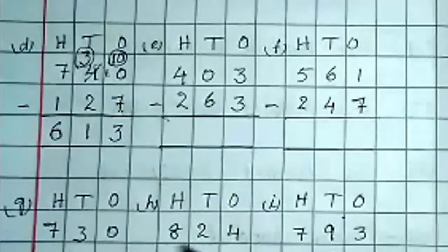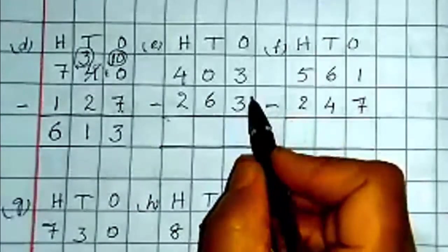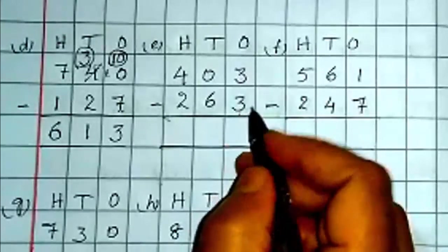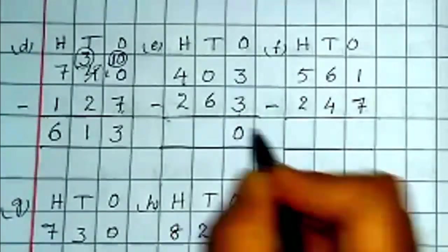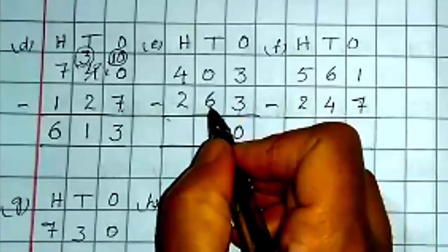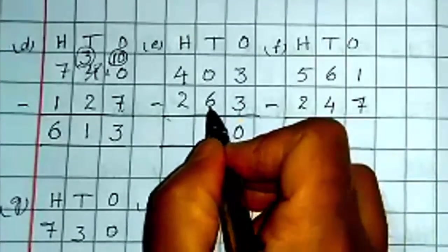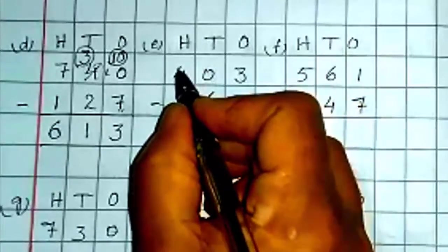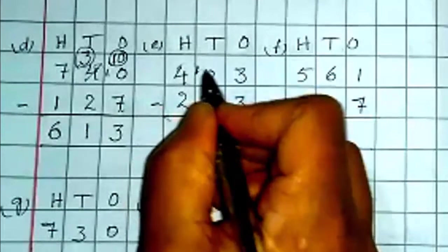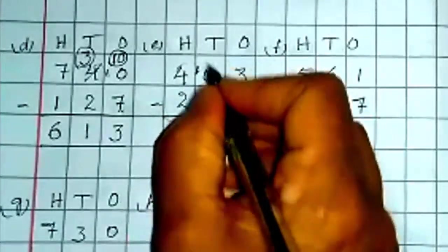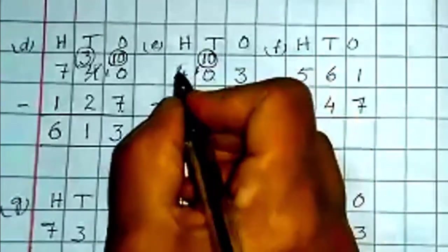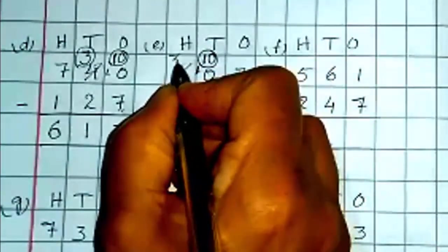Now let us do one more sum here. Now on ones place you have 3 and 3. Both the numbers are same. So 3 minus 3 is always 0. Now look here on tens place you have 0 and 6. Again 6 cannot go from 0. So you need to borrow from hundreds place. That is 100 means 10 tens. 10 plus 0 is 10. Now this will be 1 less, that is 3.